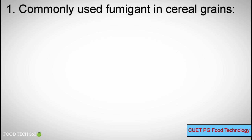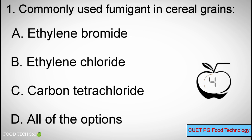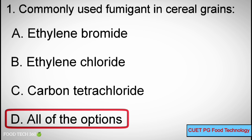Q1. Commonly used fumigant in cereal grains. A. Ethylene bromide. B. Ethylene chloride. C. Carbon tetrachloride. D. All of the options. Correct answer: D. All of the options.